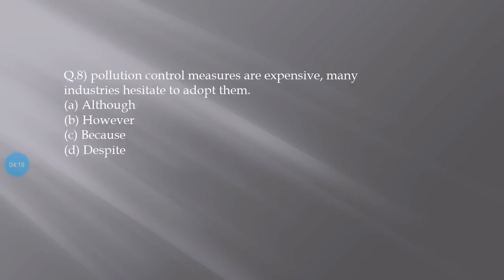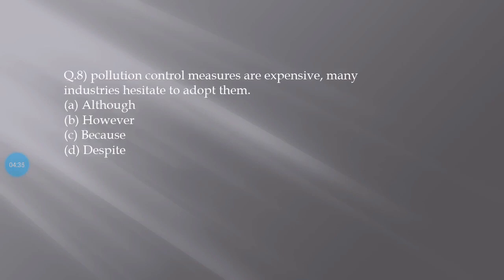Pollution control measures are expensive. Many industries hesitated to adapt them. The options are although, however, because, and despite. The correct answer here is C - because.